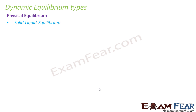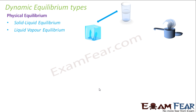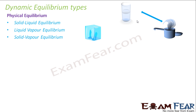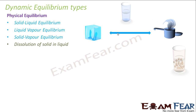The subtypes of physical equilibrium include solid-liquid equilibrium, where solid and liquid are in equilibrium. Then we have liquid-vapor equilibrium, and then solid-vapor equilibrium — for example, ice and its vapor.